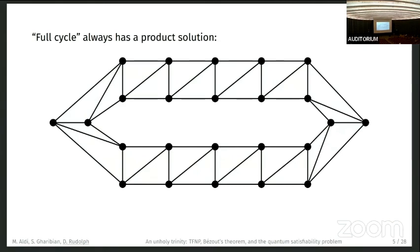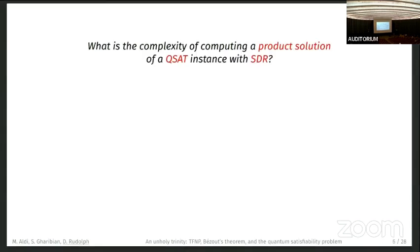A more complicated example for which you don't know how to compute the solution is this one, which we call the full cycle. We also know this always has product solutions because it's easy to see it has an SDR. We have the same number of edges and vertices. For example, you can map this edge to this vertex, this edge to this vertex, and then just go around the cycle.